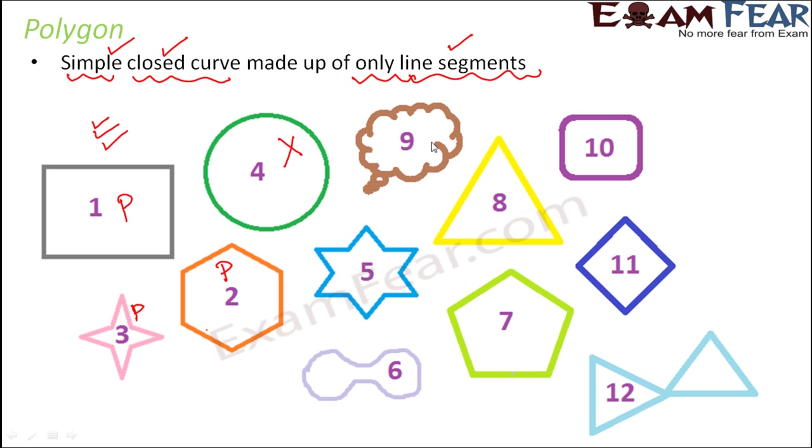Look at number nine. What about number nine? Here, if you look at it again, this is a closed curve. But again, it is not made up of line segments. So this is also not a polygon.